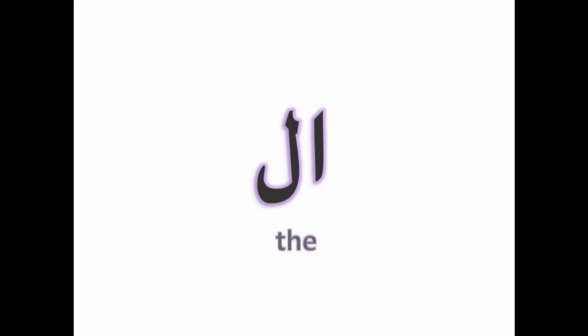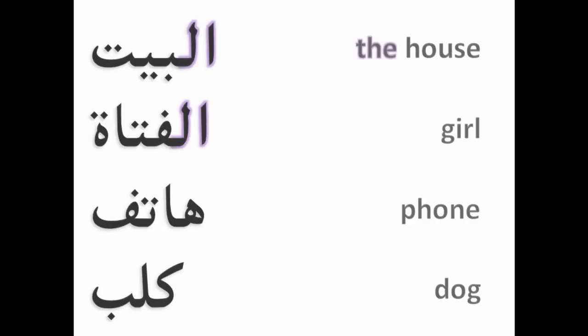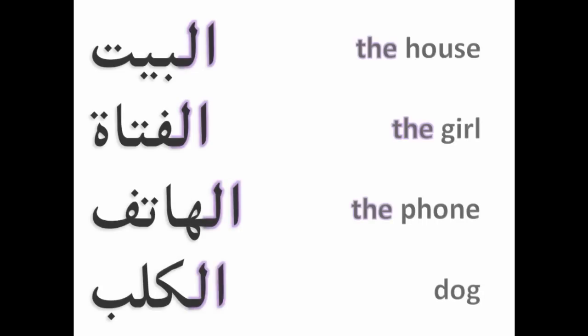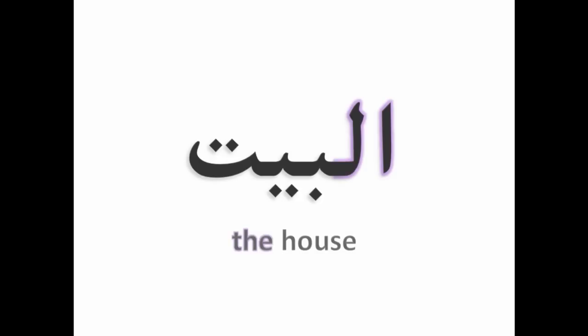For example: بيت (house), فتاة (girl), هاتف (phone), كلب (dog). With the definite article: البيت (the house), الفتاة (the girl), الهاتف (the phone), الكلب (the dog). So, بيت means 'house,' but البيت means 'the house.'